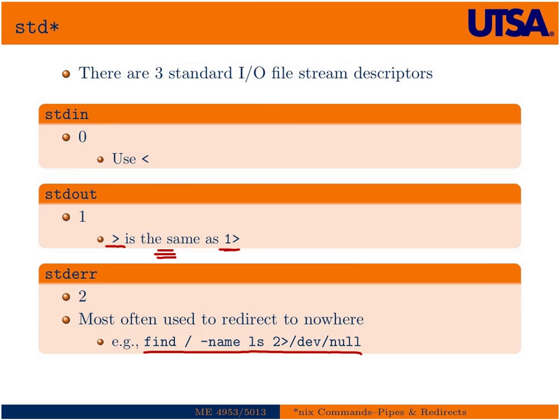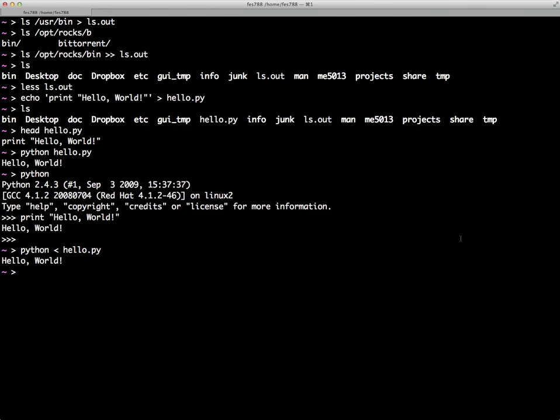And what we can do there by using the 2> redirect symbol, we can redirect that to nowhere, which is the device /dev/null, or it's kind of like the trash can. So let's go ahead and show an example of that.